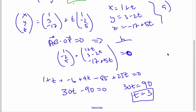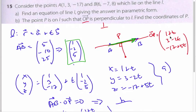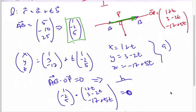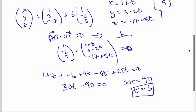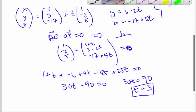With that T being 3, I plug it in for T here, will give me the coordinates of P. So I can take it, let's see, plug it in for P. I go X equals 1 plus 3,